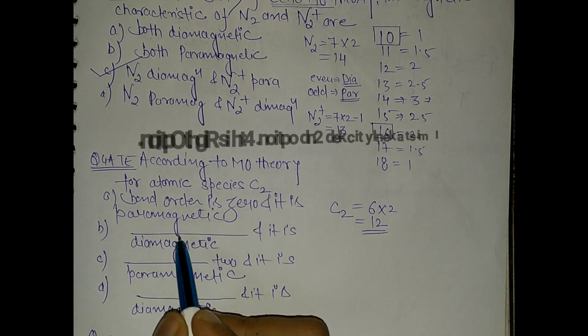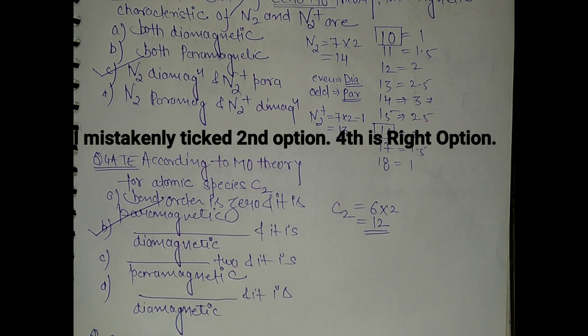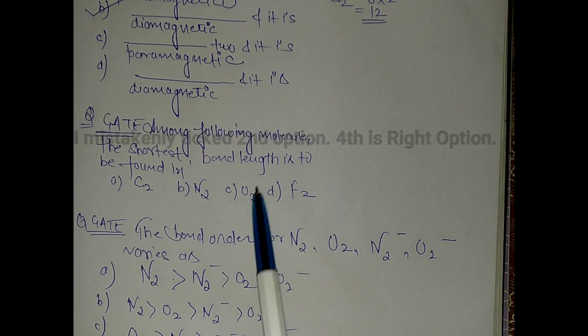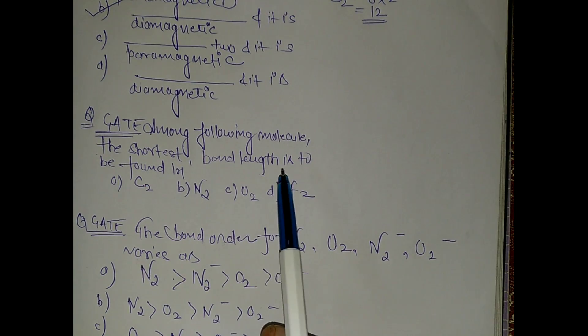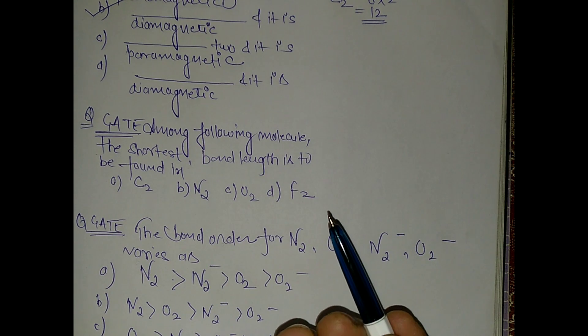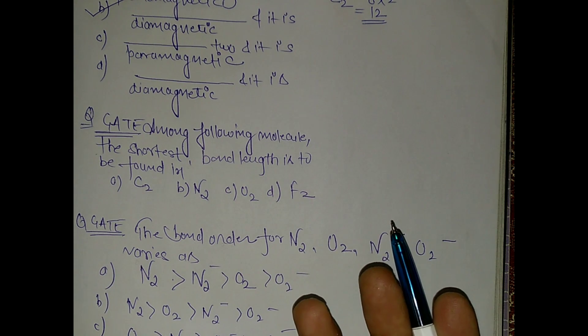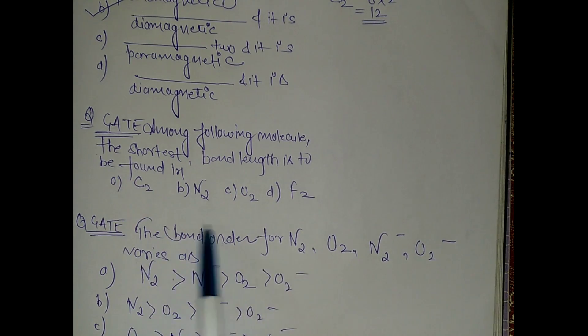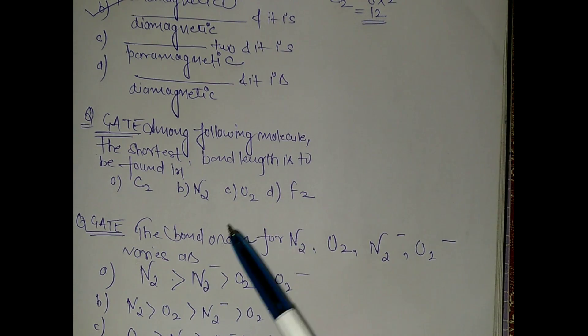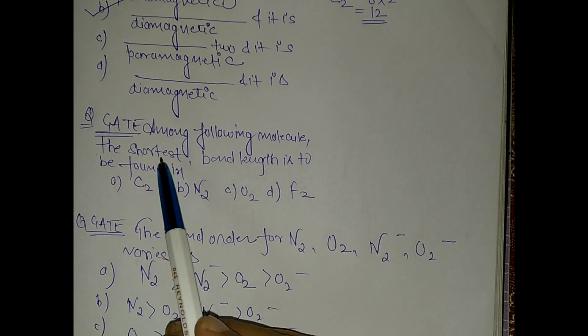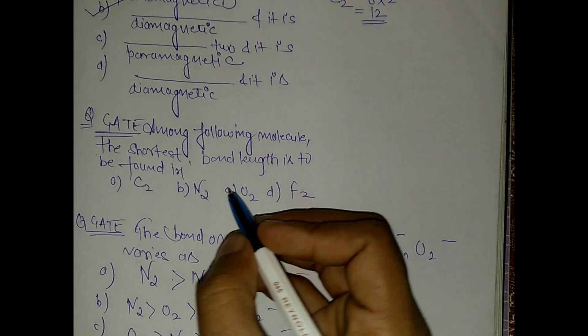Now come to the next question. Among the following, the shortest bond length is to be found in - for bond length, first calculate the bond order and it is inversely proportional to the bond length. And we have to calculate the shortest, means whichever molecule will have the highest bond order, that means it will have the shortest bond length.